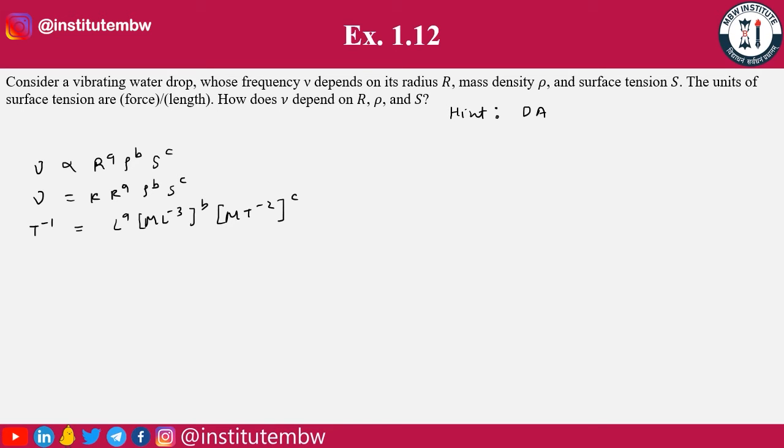Now comparing the powers of LHS and RHS. For length, there is no power in LHS, and in RHS we have a minus 3b is equal to 0. And for mass, we have b plus c is equal to 0. And for time, we have minus 1 in LHS and we have minus 2c in RHS. So equating both of these, we will get c is equal to 1 by 2, and from this b is equal to minus 1 by 2, and a is equal to minus 3 by 2.